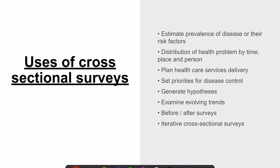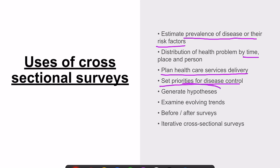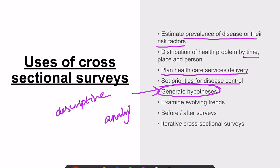Moving on to the uses of cross-sectional surveys — cross-sectional surveys are otherwise called as prevalence studies. We calculate the prevalence of a particular disease or their risk factors. We can also calculate the distribution of the health problem in terms of time, place, and person. We can plan health service delivery, set priorities for disease control, and we can generate hypothesis from descriptive and cross-sectional studies.